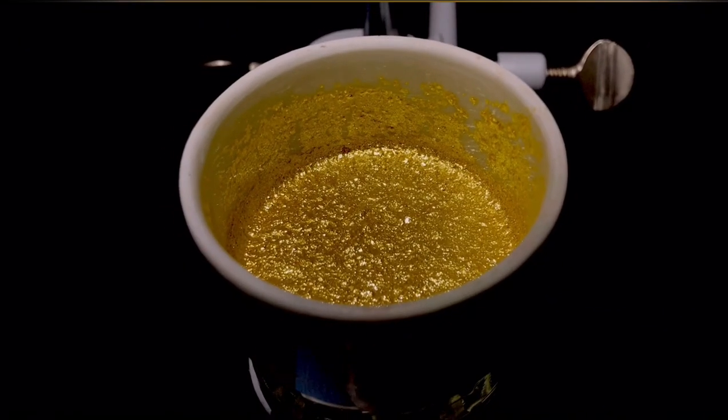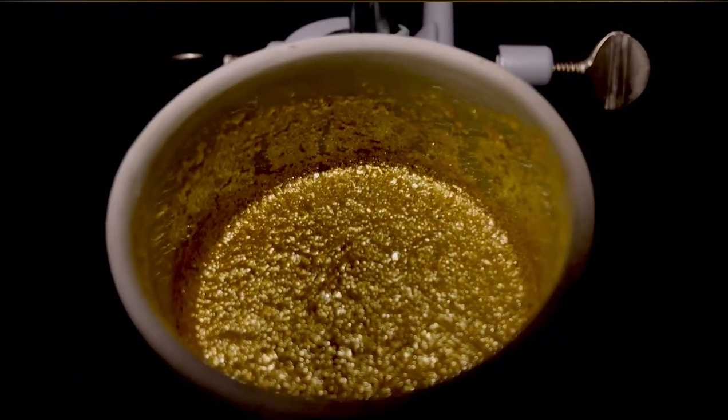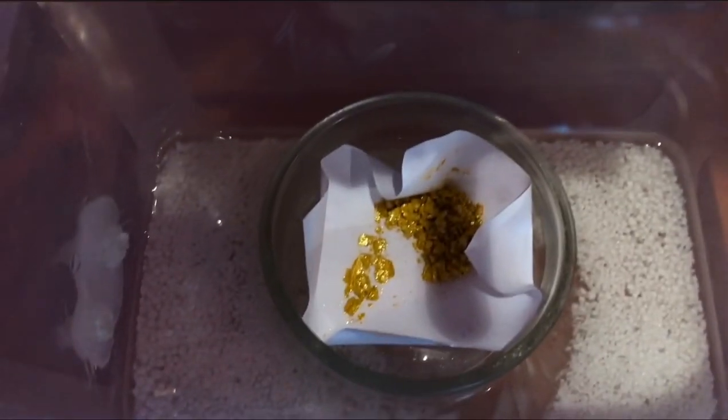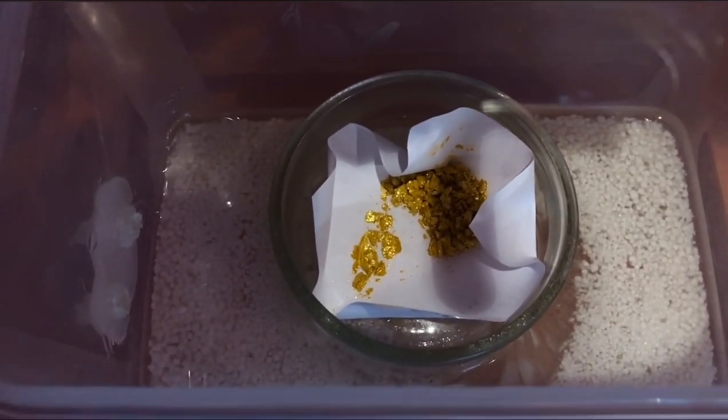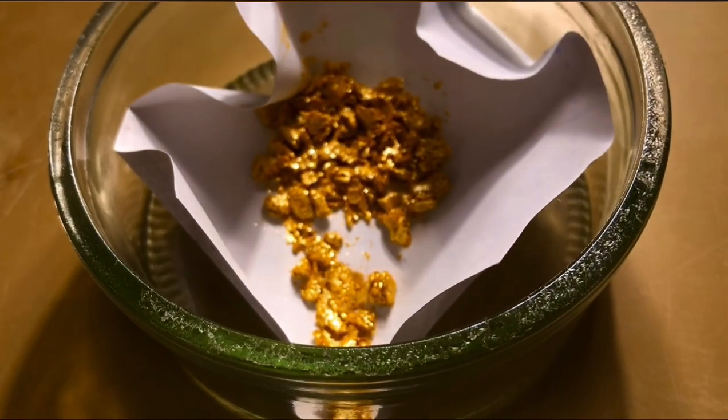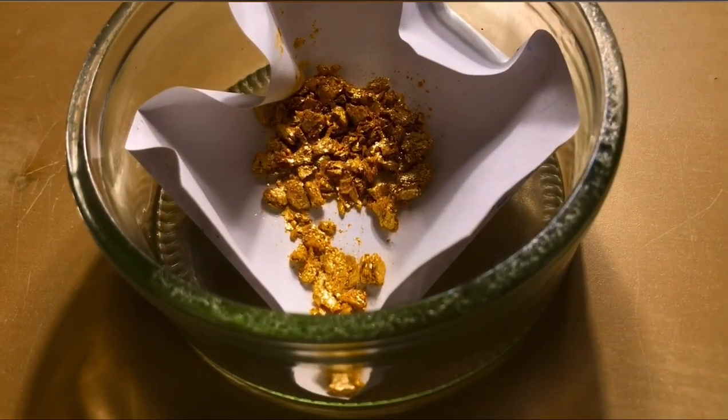In the end we were left with this dry gold-like looking solid. To dry it completely it was left in a vacuum chamber over anhydrous calcium chloride for a few hours. We were left with 3.5 grams of this fake gold. This corresponds to yields of approximately 90%.